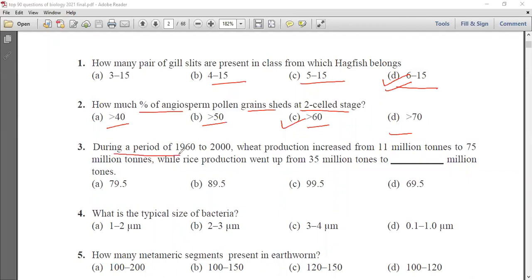Third question: during a period of 1960 to 2000 wheat production increased from 11 million tons to 75 million tons while rice production went from 35 million tons to dash million tons. The options are 79.5, 89.5, 99.5 and 69.5. It increased to 89.5 million tons. What is the typical size of bacteria? 1 to 2 micrometer, 2 to 3, 3 to 4, or 0.1 to 1 micrometer. The correct size is 1 to 2 micrometer.